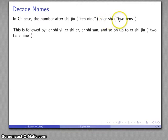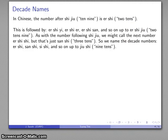Now, how do we count after this? Well, after two tens, we have er shi yi, two tens one, two tens two, two tens three, and so on, all the way up to two tens nine. And then after that, as with the number following shi jiu, we might call it two tens ten, but that's just san shi, three tens. And so we begin our decade names, two tens, three tens, four tens, and so on, all the way up to jiu shi, nine tens.